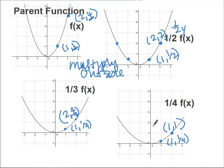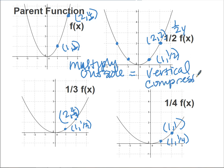Looking at the transformed graphs, they look like they're getting wider this time. That's not really what's happening — we call this a vertical compression. It's like putting your hand on top of the graph and squishing it straight down. If you did that to a piece of play-doh it would get wider and wider, even though you have the same amount of material. These graphs still go on forever; it just looks different.